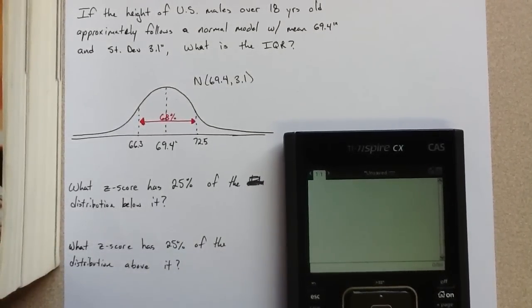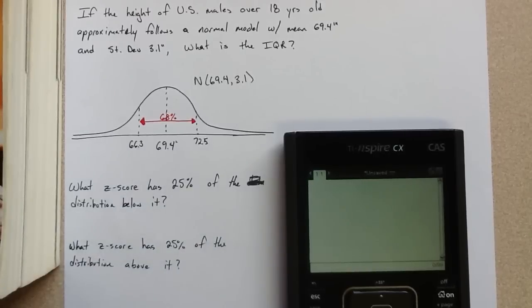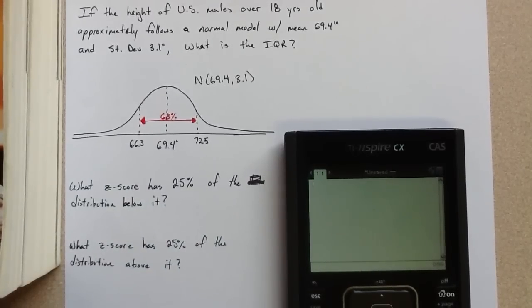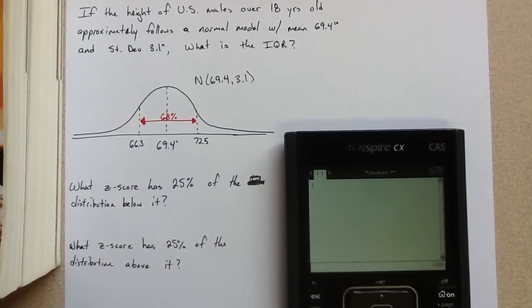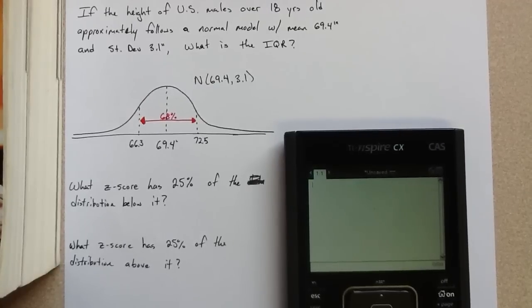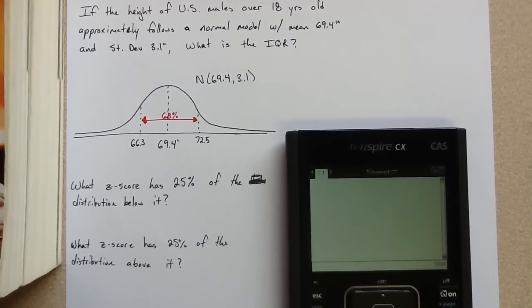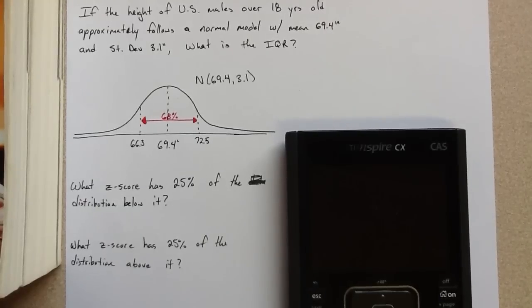Alright, so the median and mean should be approximately the same. If something follows a normal model it would be unimodal and symmetric, and if that's the case, mean and median should be pretty much the same. However, standard deviation and the IQR are not the same thing.